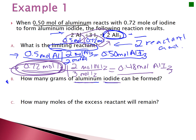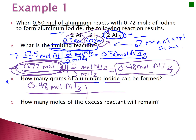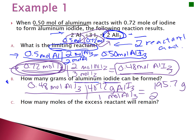Now the question asks how many grams of aluminum iodide can be formed. I know I can make 0.48 moles, and the maximum you can make is always the smallest product amount. Convert 0.48 moles of aluminum iodide to grams using its molar mass of 407.7 g/mol. That gives 195.7 grams, which rounded to two significant figures is 2.0 × 10² grams of aluminum iodide.